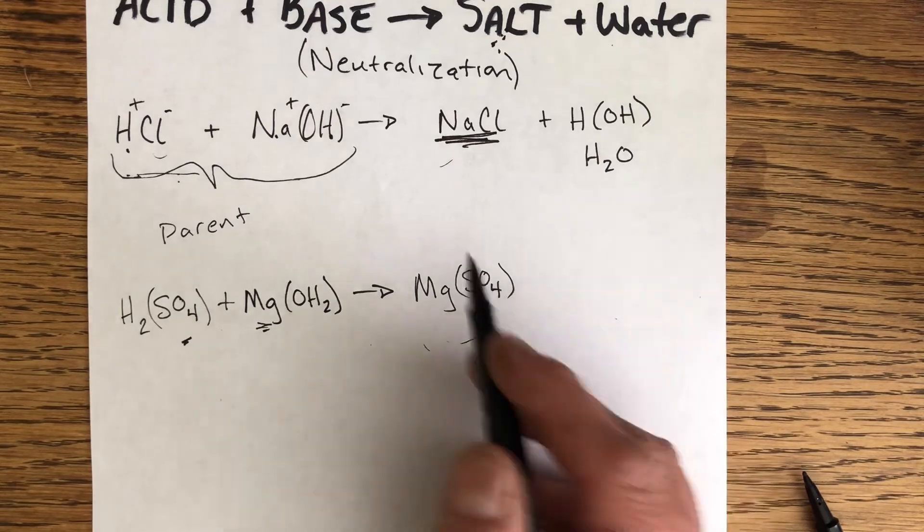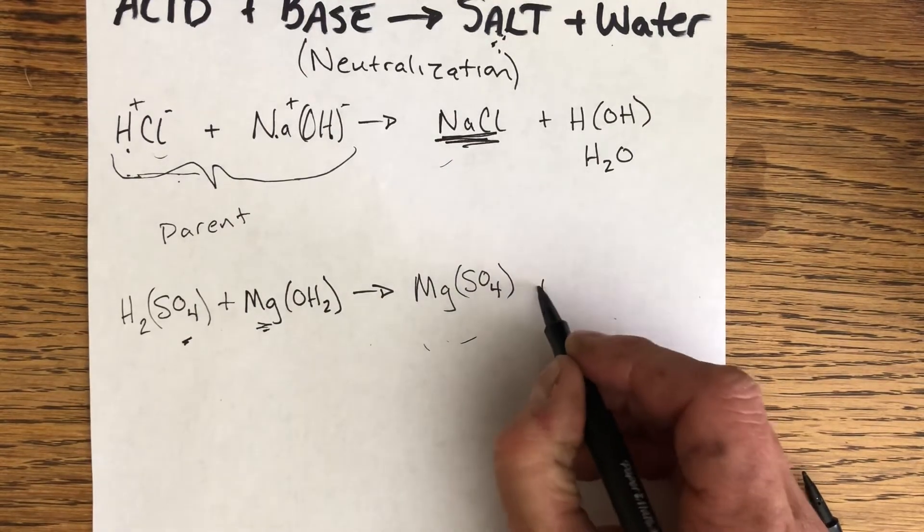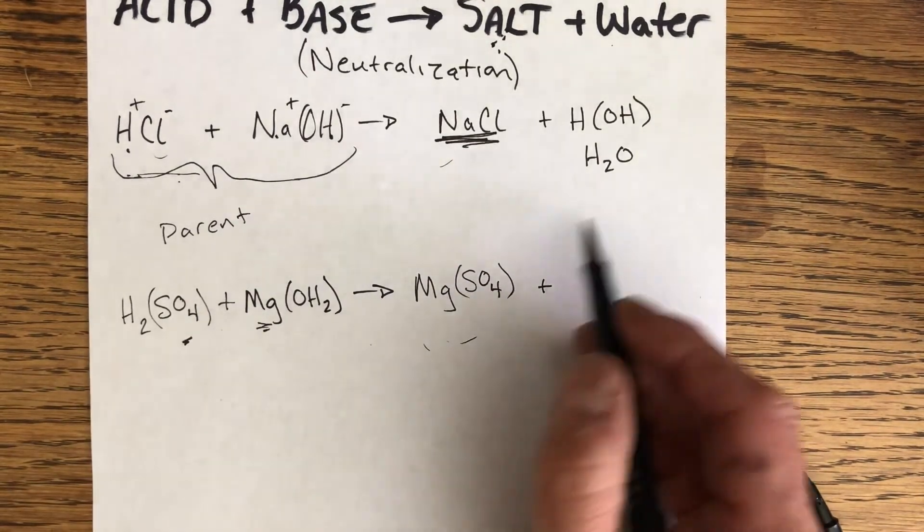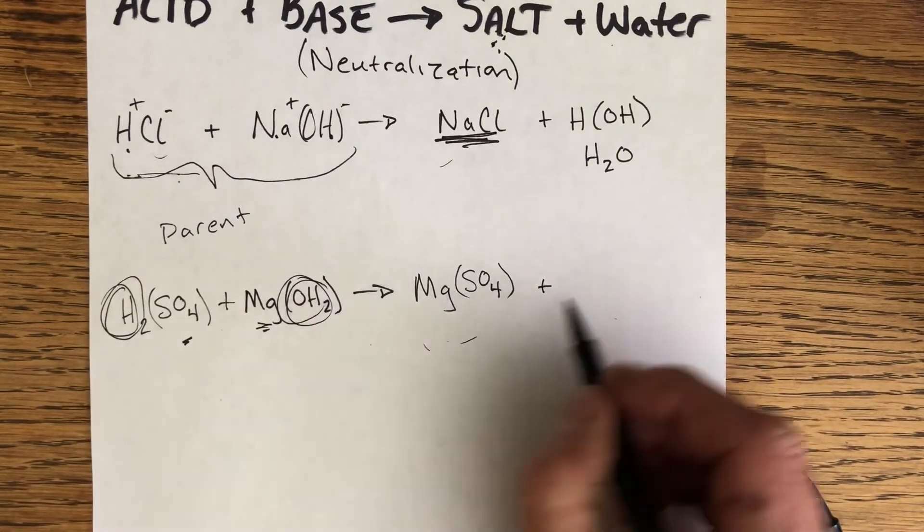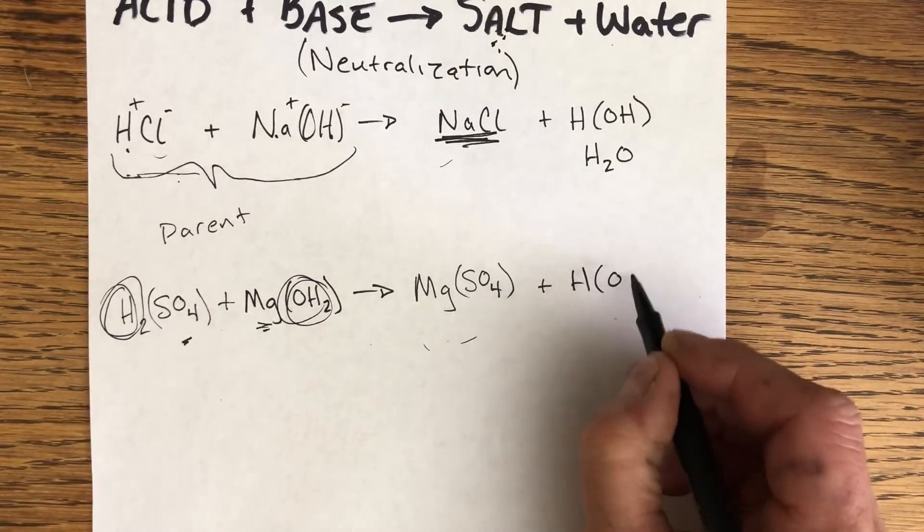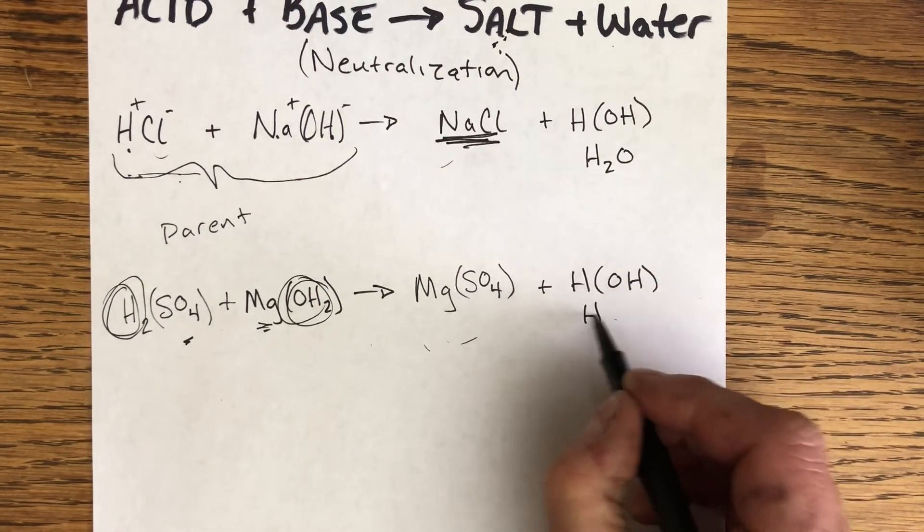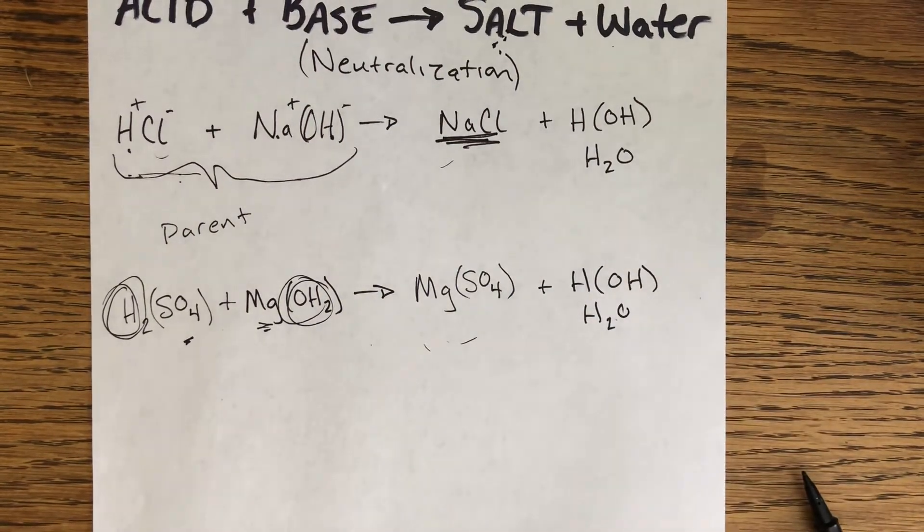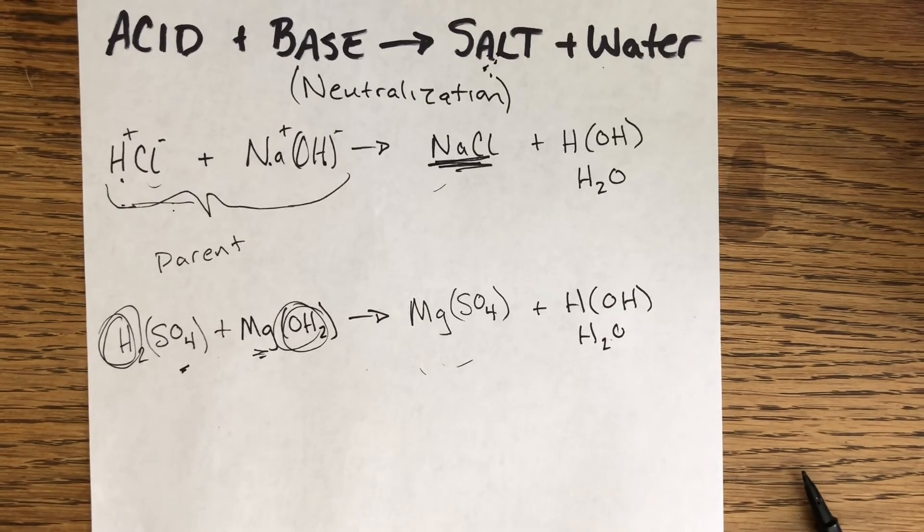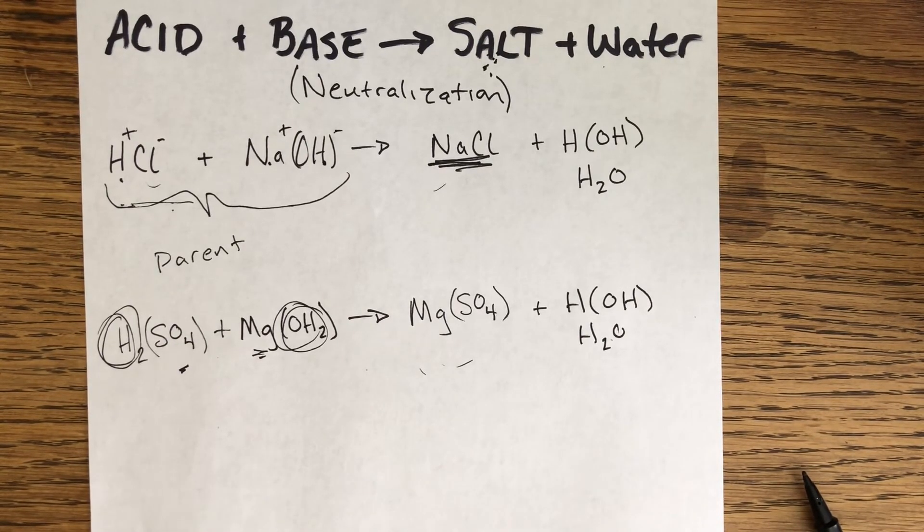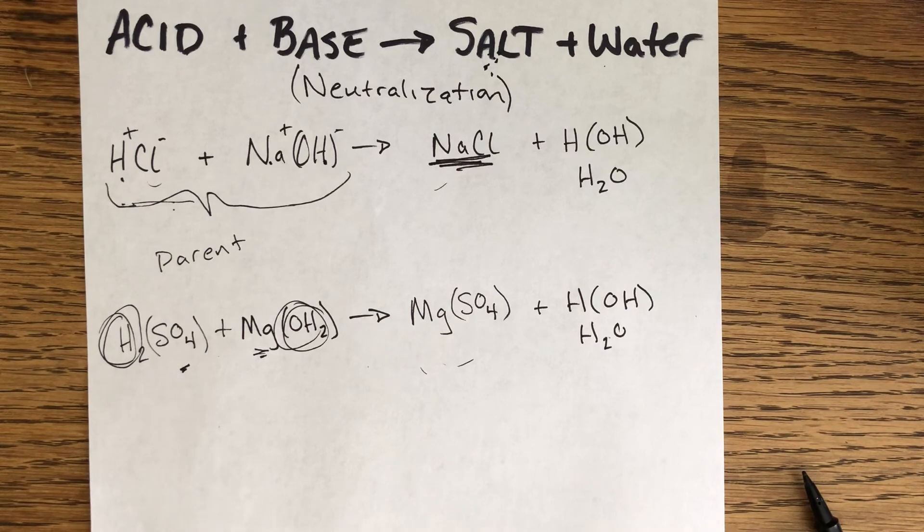Then of course, the other product over here is going to be a combination of the hydrogen and the hydroxide, again HOH, also known as H2O. That is just sort of a little intro into the world of acids and bases, and I hope that helps with a couple of these introductory unit 8 worksheets. All right, guys.